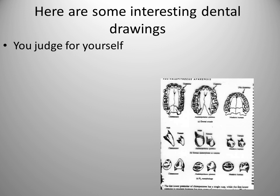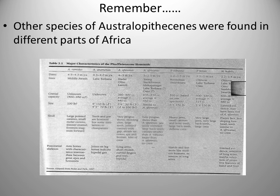There used to be an internet site called the Lucy Test, put on by creationists. They would give you a picture of a dental arcade — a human, a chimp, a baboon, and an Australopithecus — and you had to decide which one looked more human. What you're seeing on top is the dental arcade of a chimp, then an Australopithecine — kind of an intermediate step — versus modern humans. There's also a really good chart in your book that talks about the different species found, where they were found, the dates, and the important sites.